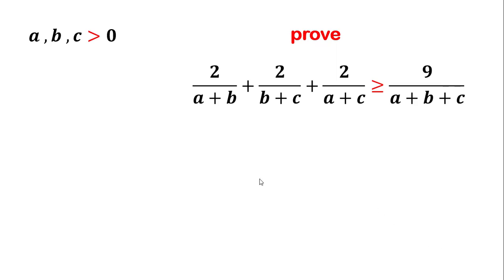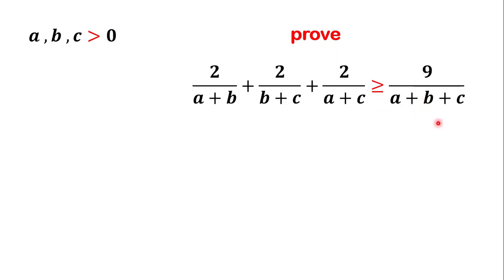Hi everyone, welcome back to Math Academy. In this video, we are given that a, b, and c are positive numbers, and we are going to prove that 2 over (a+b) plus 2 over (b+c) plus 2 over (a+c) is greater than or equal to 9 over (a+b+c).